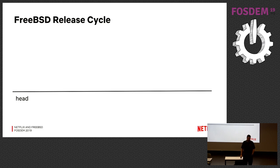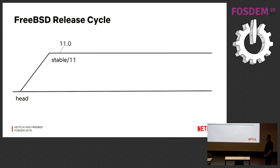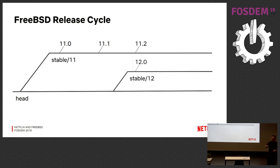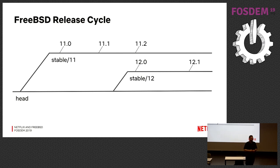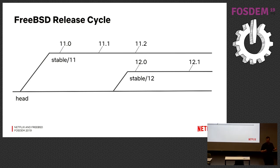The FreeBSD release cycle looks like a typical open source project release cycle. There is a head branch — the development branch — where new features and bug fixes go first. Then there are release branches that come off periodically, called stable branches. For instance, there was a stable 11 branch about two years ago, which is where all 11.x releases come from. There recently was a stable 12 branch created. Over time the code diverges, new features go into head, and not all of them are backported depending on how stable they are.